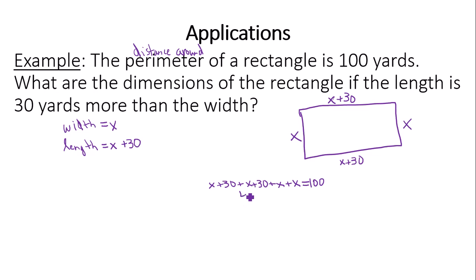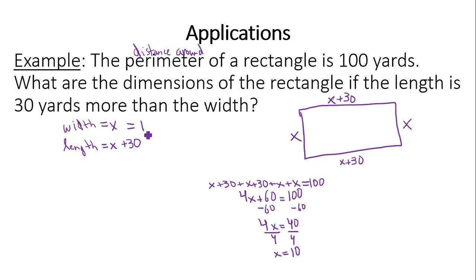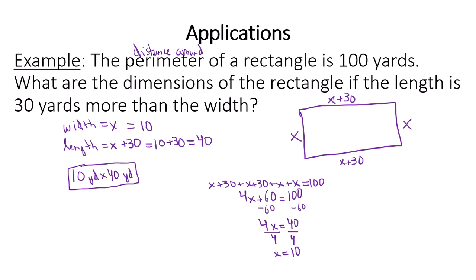Setting up the equation: (x+30) + (x+30) + x + x = 100. On the left side we have 4x plus 60 equals 100. Subtracting 60 from both sides: 4x equals 40. Dividing by 4 gives x equals 10. So the width is 10 yards, and the length is 10 plus 30, which is 40 yards. The dimensions of the rectangle are 10 yards by 40 yards.